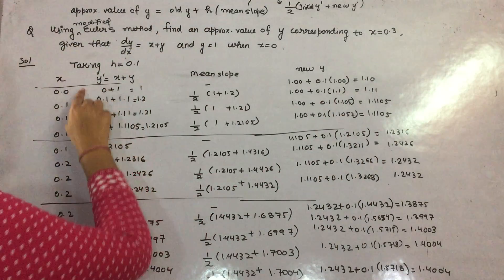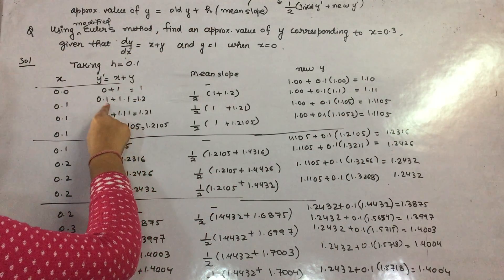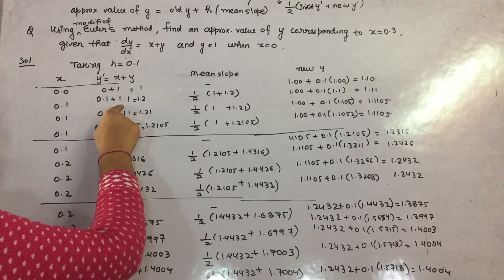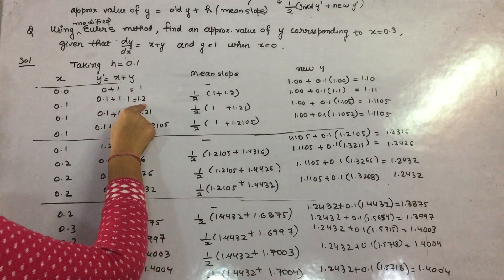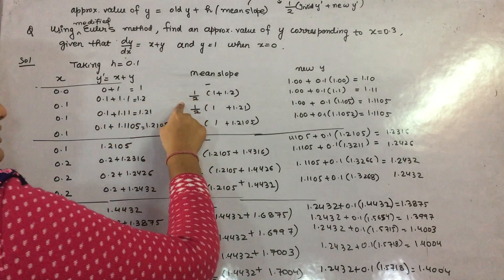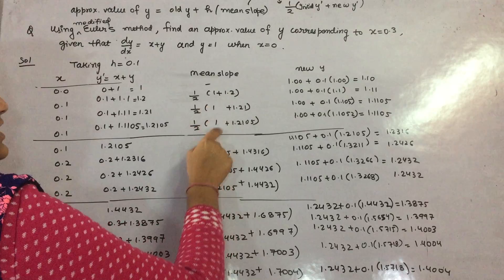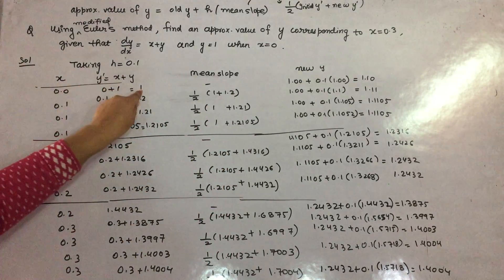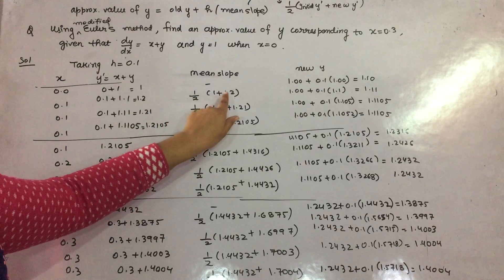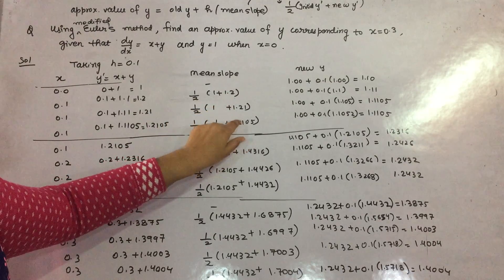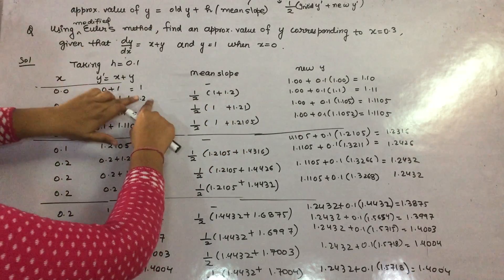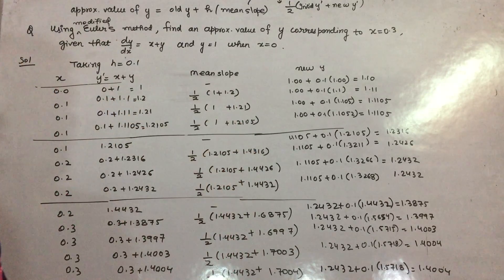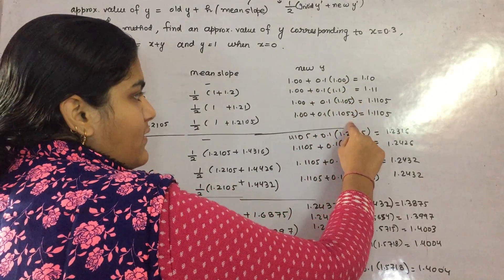Now in the second sub-step, y-dash equals x plus y. Here x is 0.1 and your new y is 1.1, so y-dash comes out to be 1.2. Now your mean slope is half of the initial y-dash, which is 1, and the successive y-dash which is 1.2, giving values 1.21 and then 1.2105.